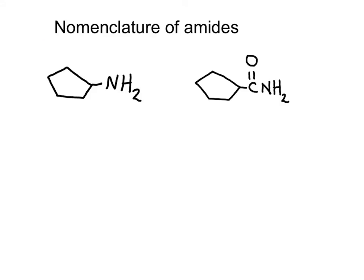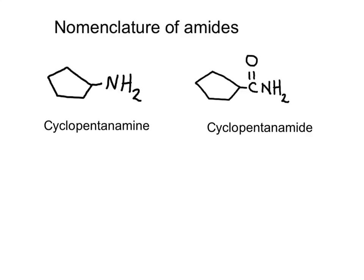You need to pay close attention to functional groups. An amine has N as in Nancy, and an amide has a carbonyl group. Cyclopentanamine is a base because of its nitrogen. However, cyclopentanamide, because of the carbonyl and the nitrogen, is neutral. They are completely different types of substances.